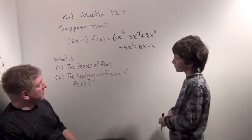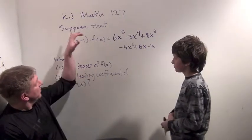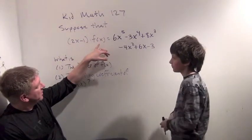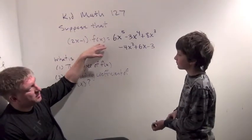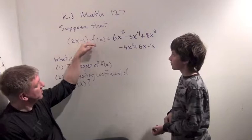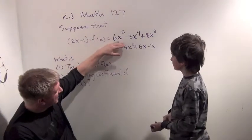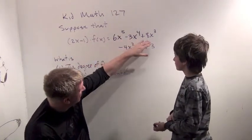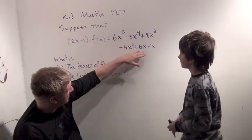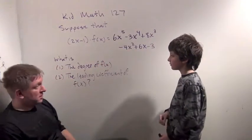So today, for our movie, we'll do a theory question. Suppose that 2x minus 1 times f of x, and f of x is supposed to be a polynomial, equals 6x to the 5th minus 3x to the 4th plus 8x cubed minus 4x squared plus 6x minus 3.